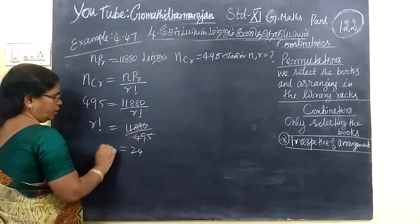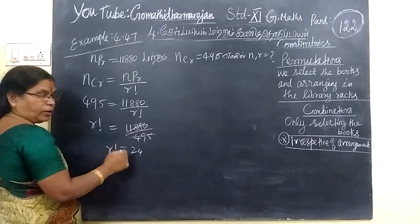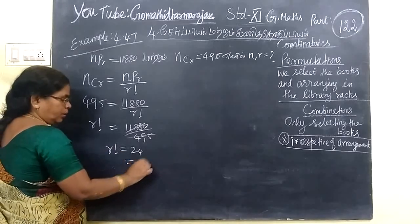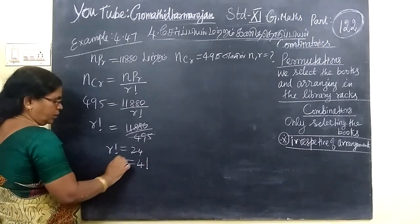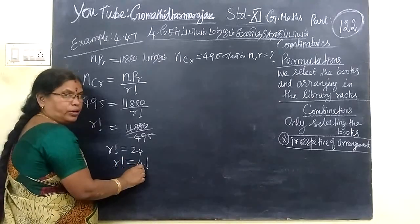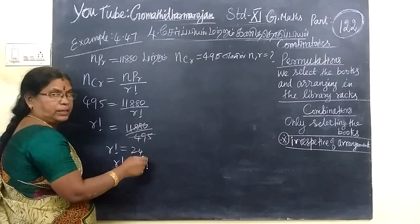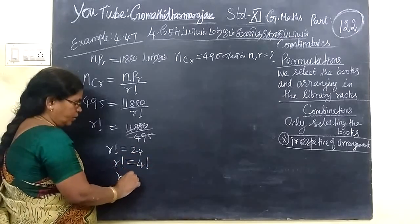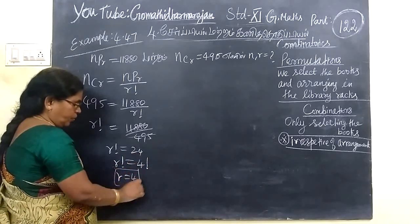This cancels, we are getting 24. The factorial notation is R factorial. So R is 4 into 3 into 2 into 1, this is nothing but 24, which implies R equal to 4.